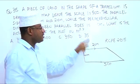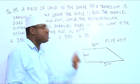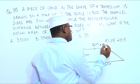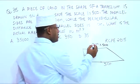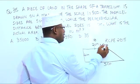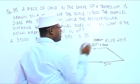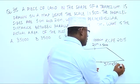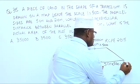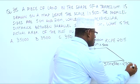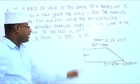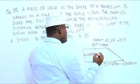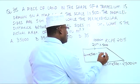Let us get the actual distances. The actual distance for the 2 cm side is 2 times 500, giving 1,000 centimeters. The actual distance for the 5 cm side is 5 times 500, giving 2,500 centimeters. And the perpendicular distance of 4 centimeters multiplied by 500 gives us 2,000 centimeters.